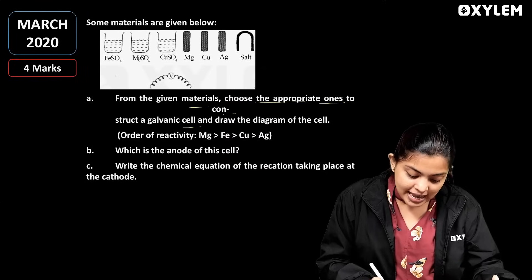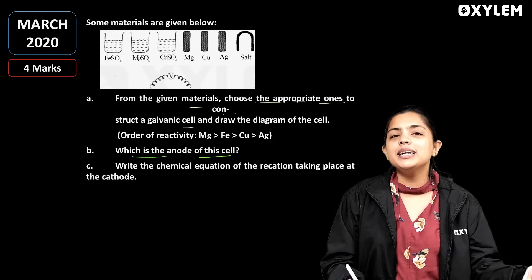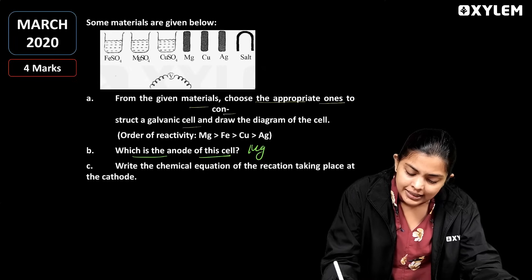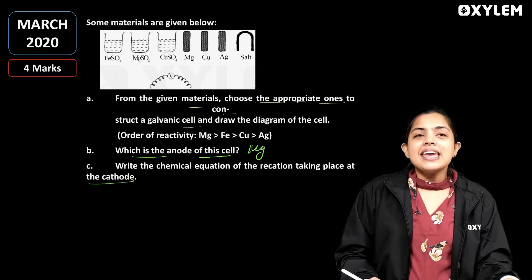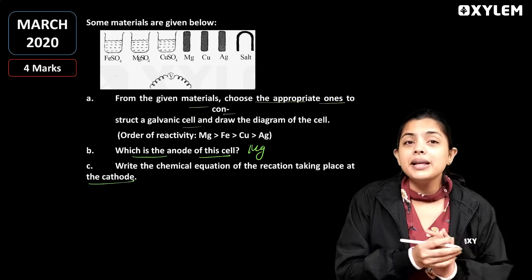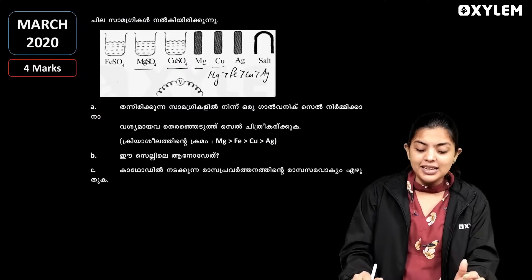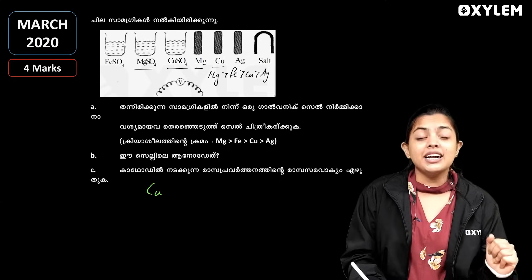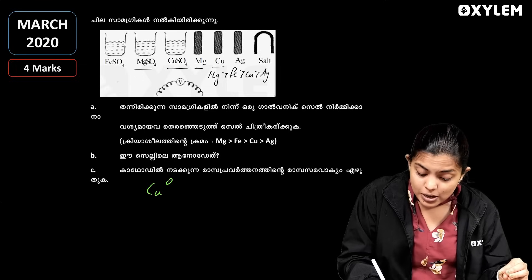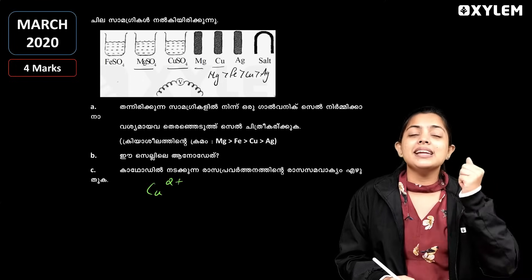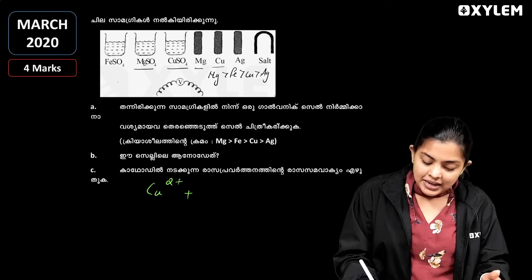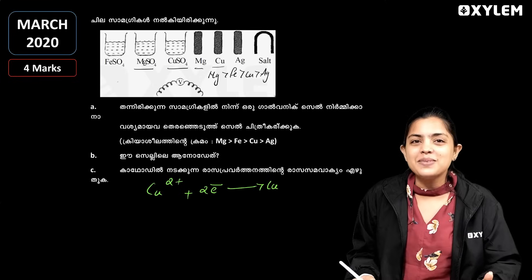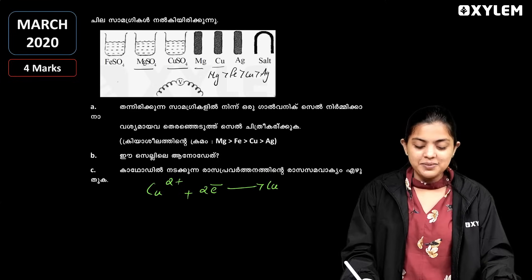Next question: which is the anode of the cell? Anode is the same as the higher reactivity item. The chemical equation taking place at the cathode: the cathode is related to copper. The cathode involves reduction of copper.